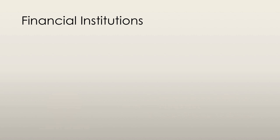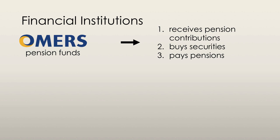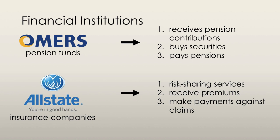Pension funds are financial institutions that receive pension contributions of firms and workers. They use these funds to buy a portfolio of securities expected to generate income in the future, and this income is used to pay pension benefits. Insurance companies provide risk-sharing services, entering agreements with households and firms to provide compensation in the event of accident, theft, fire, etc. They receive premiums from customers and make payments against claims, using money not paid out to purchase other financial instruments. The profit is the gap between earnings from premiums and interest minus money paid out to claims.